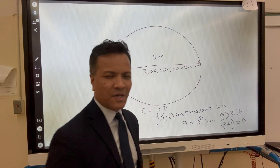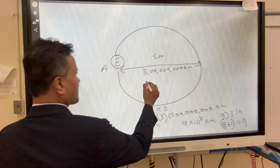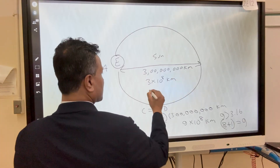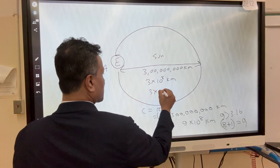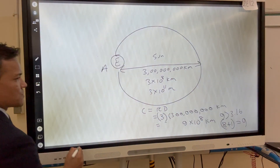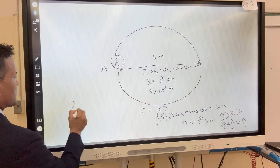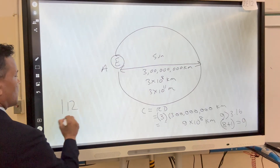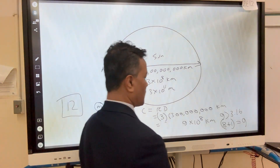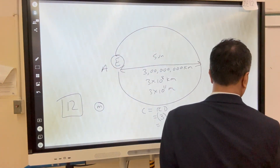That is 9 orders of magnitude in terms of kilometers. If you convert to meters, 3 × 10⁸ km becomes 3 × 10¹¹ meters, giving 12 orders of magnitude in terms of meters.